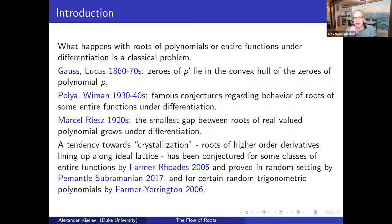What happens with roots of polynomials or entire functions under differentiation is a classical problem. It goes back to Gauss and Lucas in the 1860s and 1870s. It's a well-known result that the roots of the derivative of a polynomial lie in the convex hull of the zeros of the polynomial. A little bit later, there were a series of famous conjectures about behavior of roots of some entire functions under differentiation, some of which were solved, others not quite.